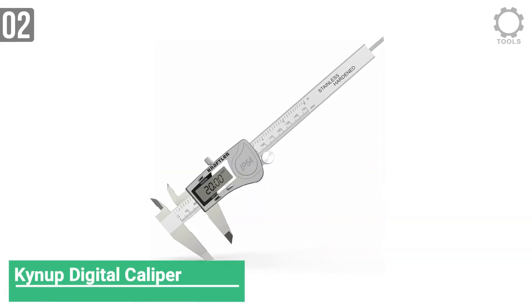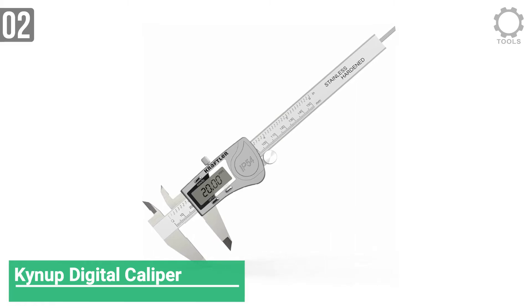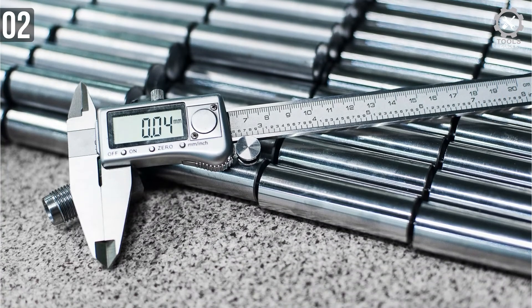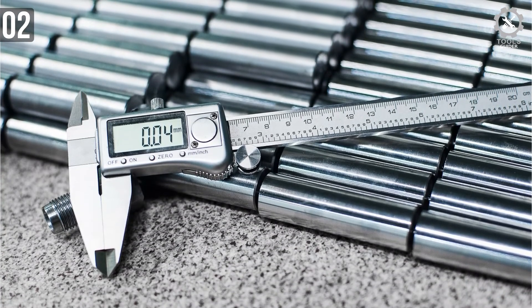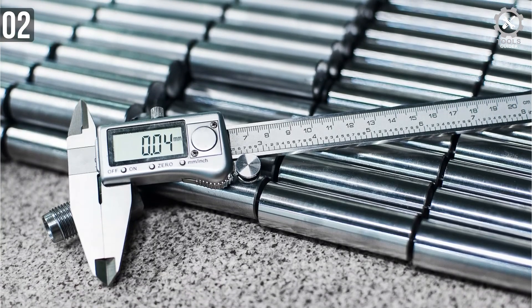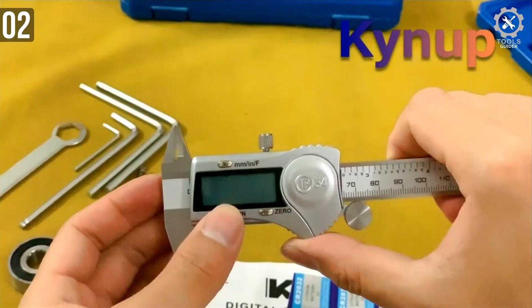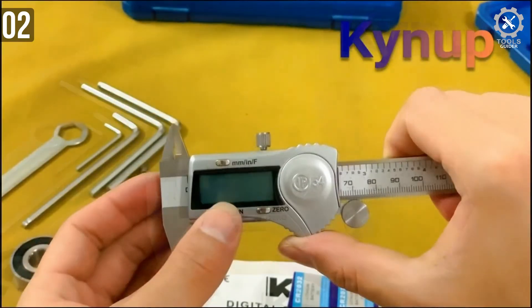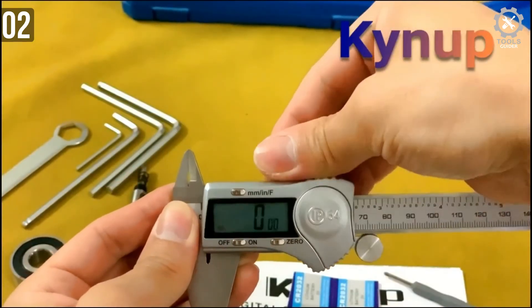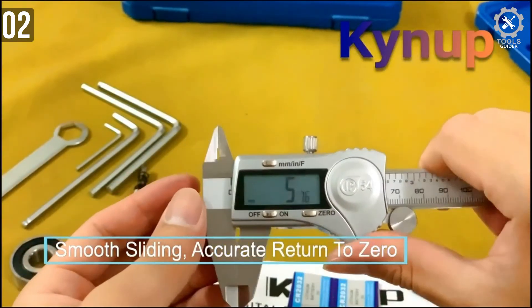Number 2: Kynop Digital Caliper. Kynop Digital Caliper comes with IP54 industrial protection grade design. It features stainless steel roller for a longer life. High-end brushed stainless steel body and precision grinding and polishing process makes it easier to return to zero.